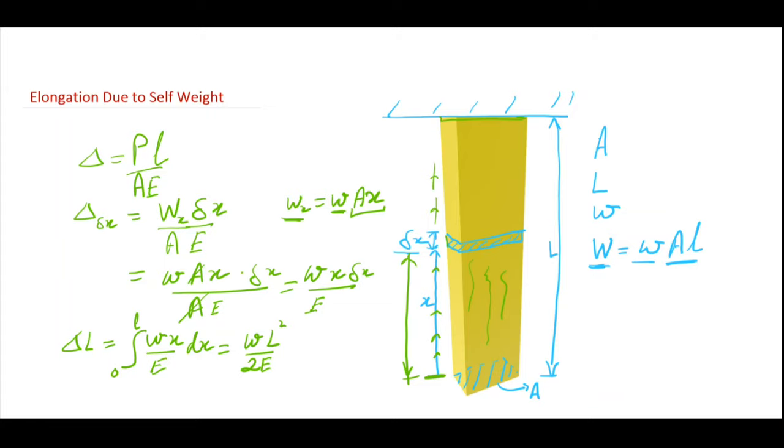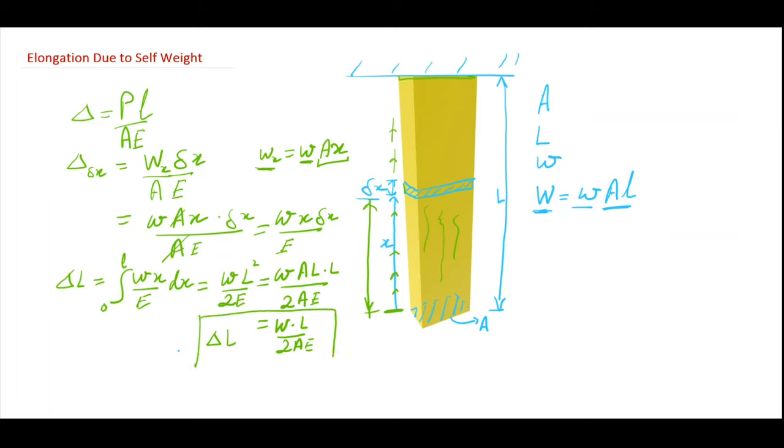And if I rearrange some terms for the further analysis, I just added one area here. So I can also write this as capital W into L by 2 A E. This is the formula for the elongation that a material undergoes due to its own weight.